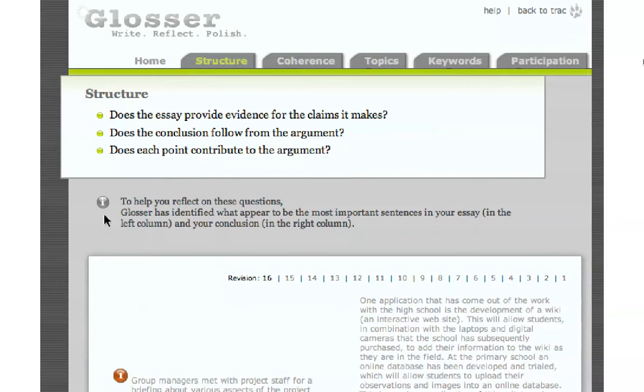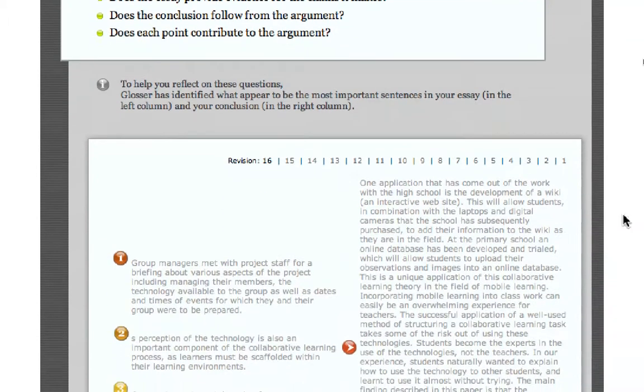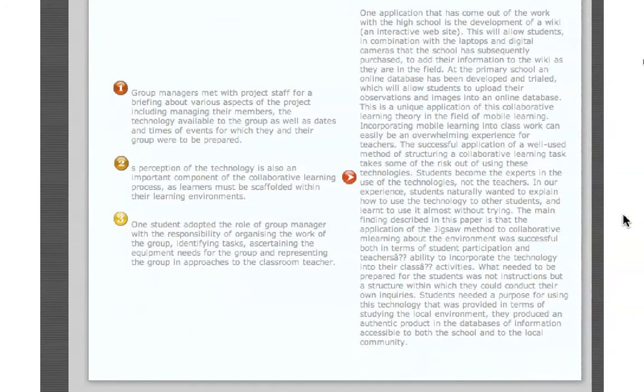In the structure section, Glosser pulls out the three or more main points in the essay and places them beside the conclusion. Does each point contribute to the argument and conclusion?